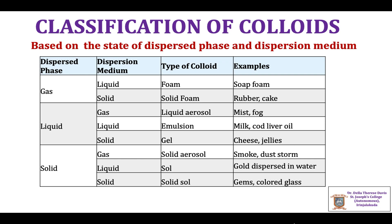When the dispersed phase is a liquid and the dispersion medium is gas, it is called a liquid aerosol. The best examples are mist and fog. When both the dispersed phase and the dispersion medium are liquids, it is called an emulsion. Examples include milk, cod liver oil, etc.